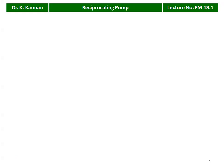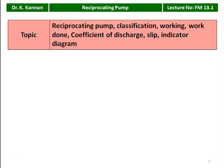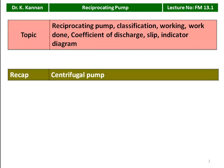We are going to discuss about the reciprocating pump in the 13th chapter. The topics for discussion in this lecture will cover: the reciprocating pump, its classification, working and the work done, coefficient of discharge, slip, and the indicator diagram of the reciprocating pump. In the earlier chapter, we discussed the centrifugal pump — its working, design parameters, and efficiency. In this lecture, we are going to talk about the reciprocating pump.